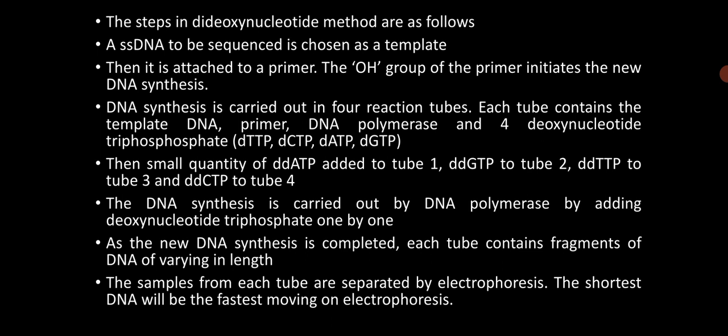The template strand is the source DNA, the primer is a short segment of DNA that initiates synthesis, and DNA polymerase is the core enzyme for DNA synthesis. A small quantity of dideoxy adenine triphosphate is added to tube 1, dideoxy guanine triphosphate to tube 2, dideoxy thymine triphosphate to tube 3, and dideoxy cytosine triphosphate to tube 4. The DNA polymerase adds nucleotides one by one, but wherever a dideoxy nucleotide triphosphate is incorporated instead of a deoxy nucleotide triphosphate, synthesis stops. This produces DNA fragments of different lengths in each tube.